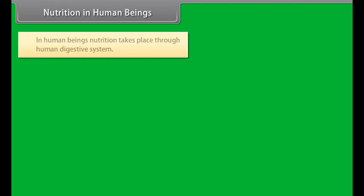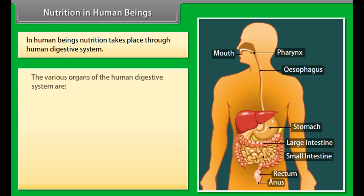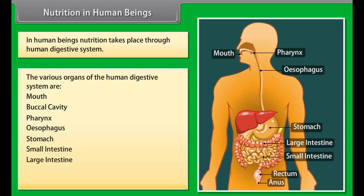Egestion is the process by which undigested food is removed from the body. The whole food we eat is not digested; a part remains undigested which cannot be used by the body. This undigested part is then removed in the form of feces when we go to the toilet.